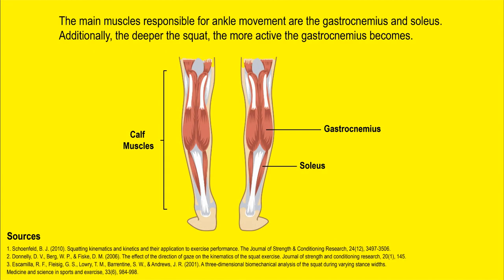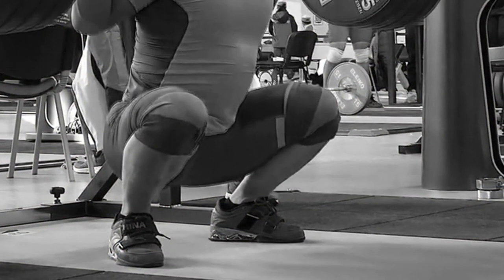The main muscles responsible for dynamic ankle movement are the gastrocnemius and the soleus — collectively called the calf muscles. The literature states that the deeper you squat, the more active the gastrocnemius becomes. Above 90 degrees the activity is very small, but once you go below that to ass-to-grass level, activity rises significantly — it is directly proportional to knee flexion. At the bottom of an ass-to-grass squat, the gastrocnemius is at its highest activity level. So the deeper you wish to squat, the more ankle mobility you will need.